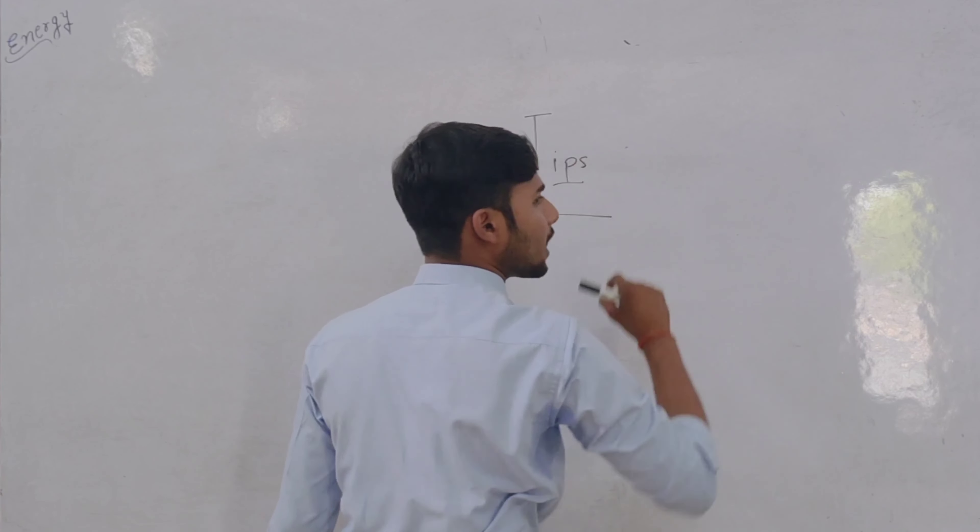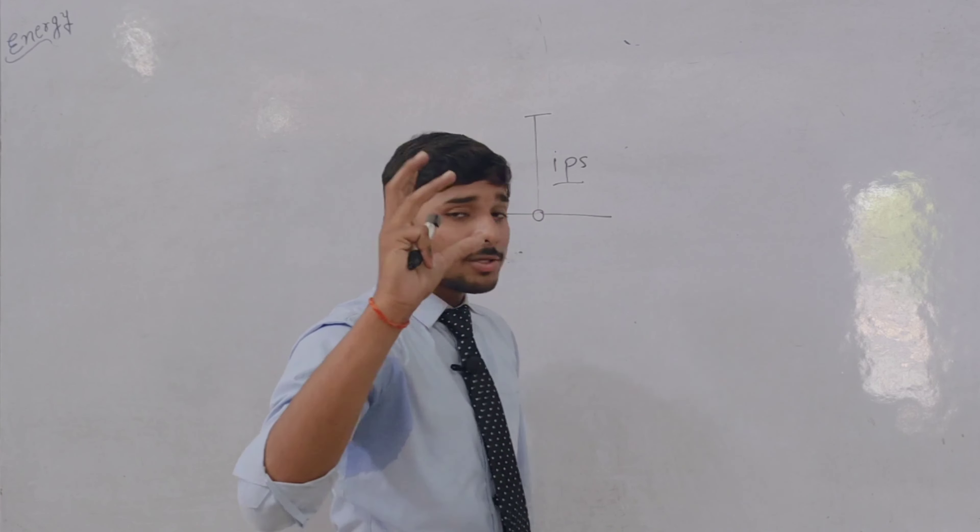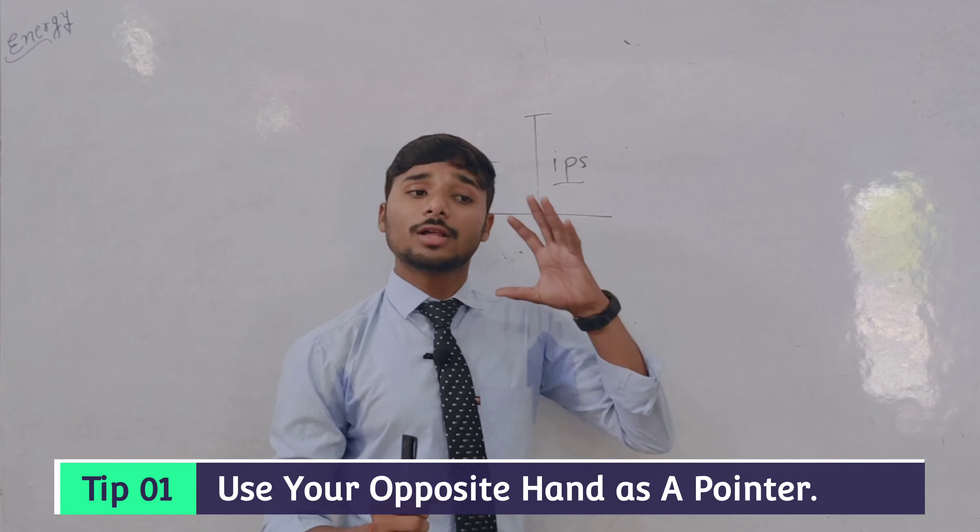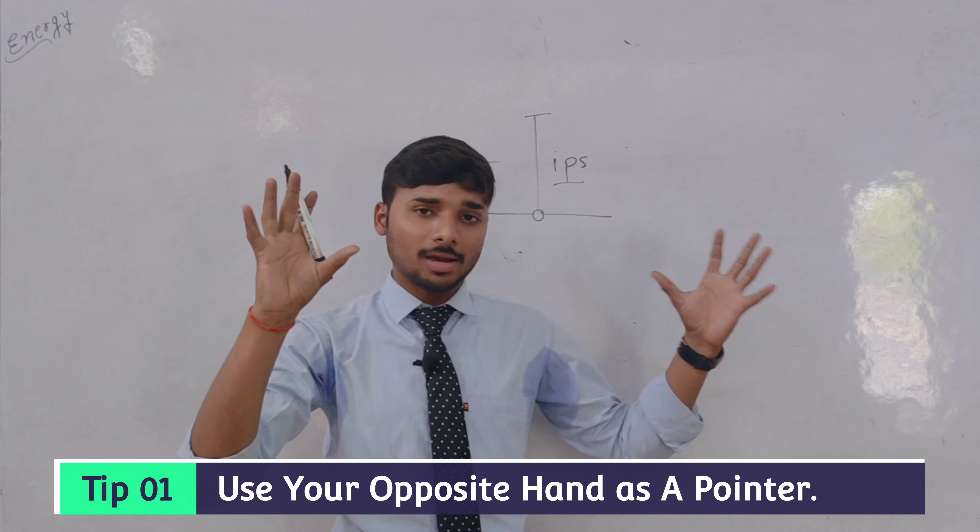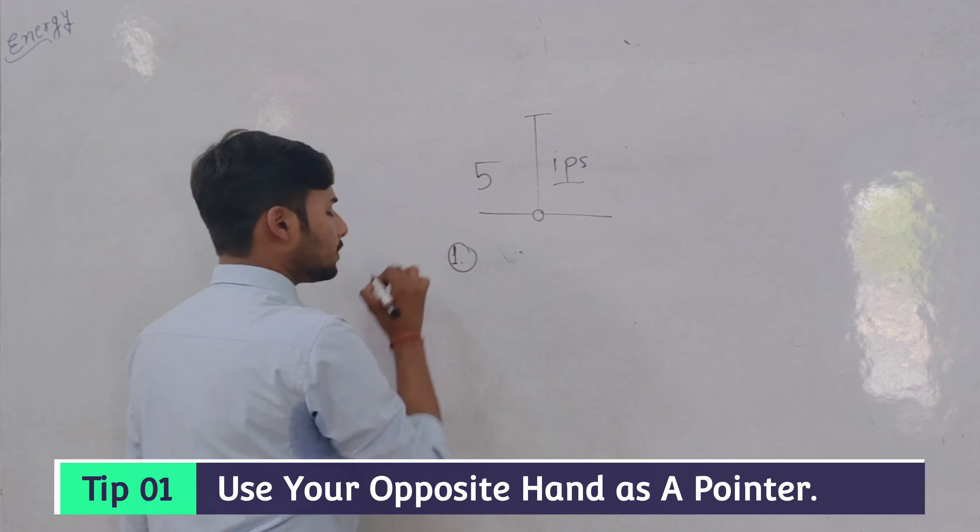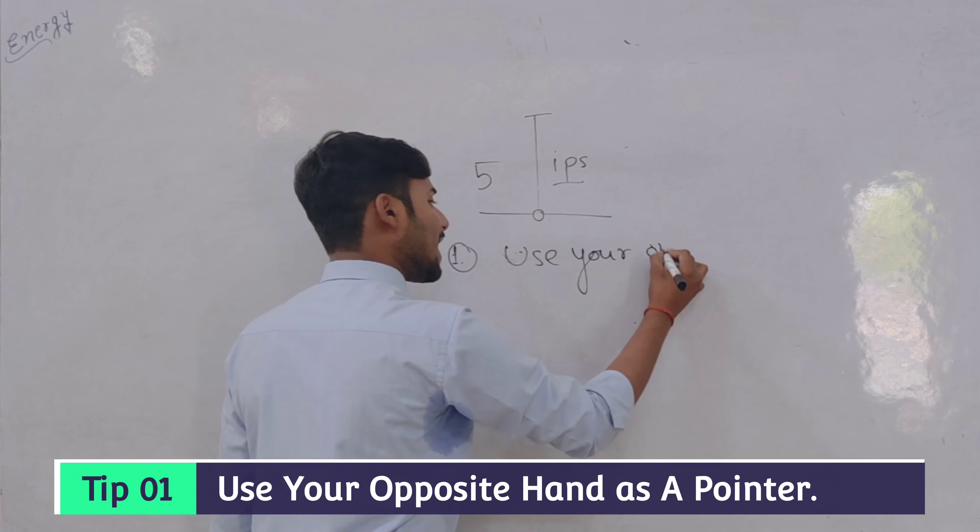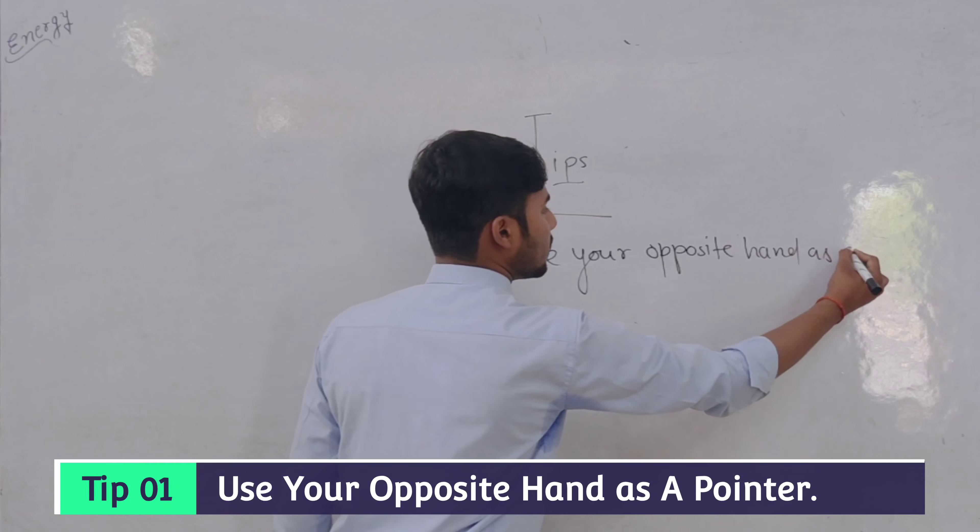Your connection is breaking. So always use your opposite hand as a pointer. If I am using this hand, I need to use this hand to point. Let me write it first. Tip number one: Use your opposite hand as a pointer.